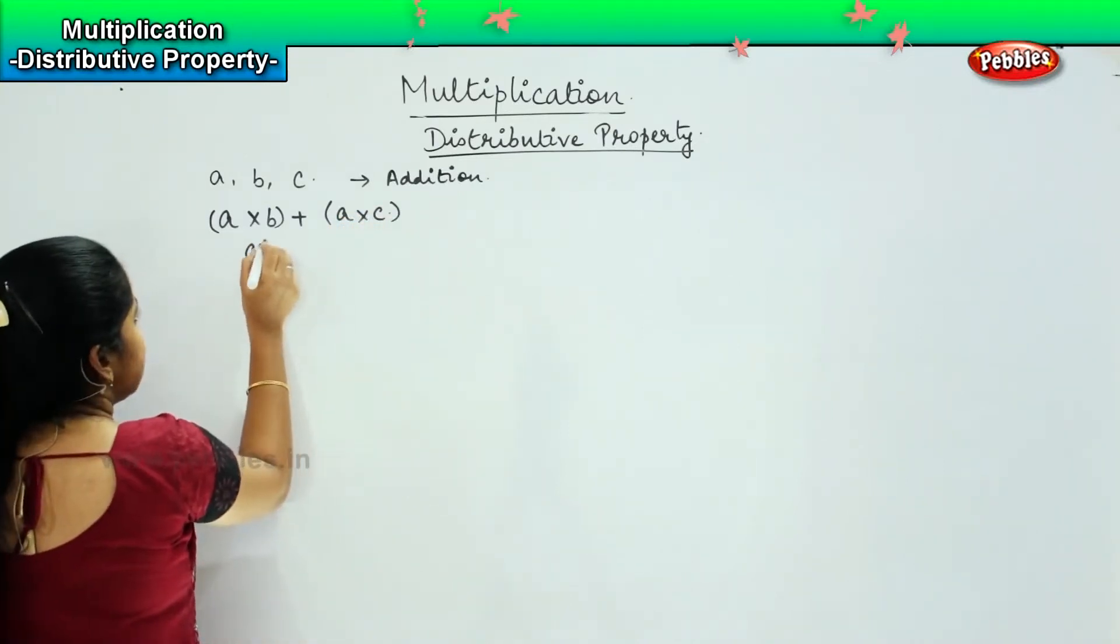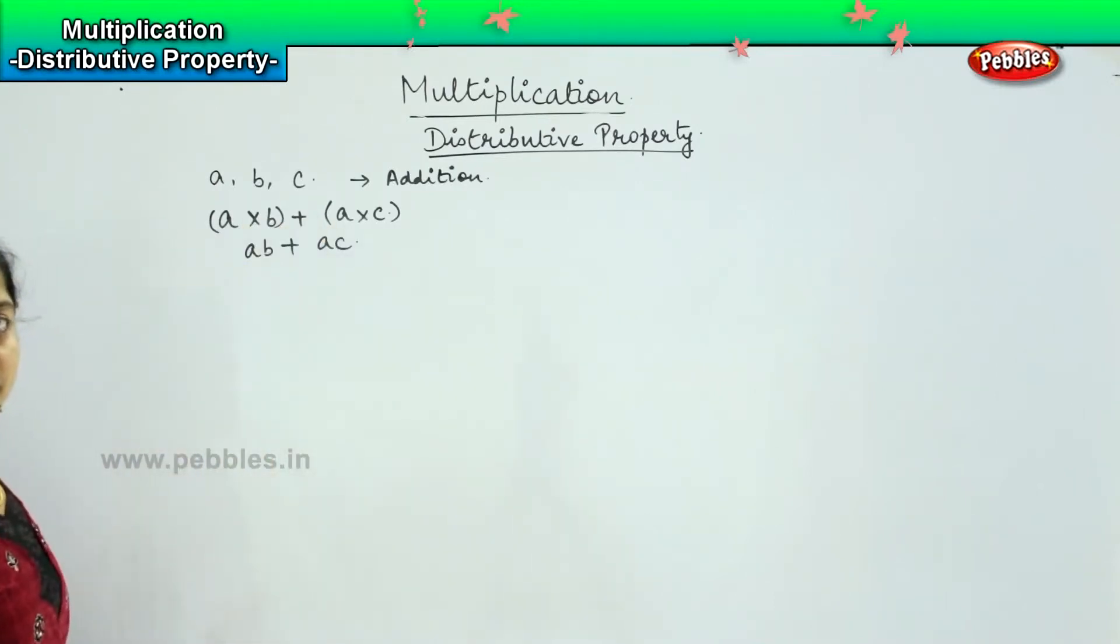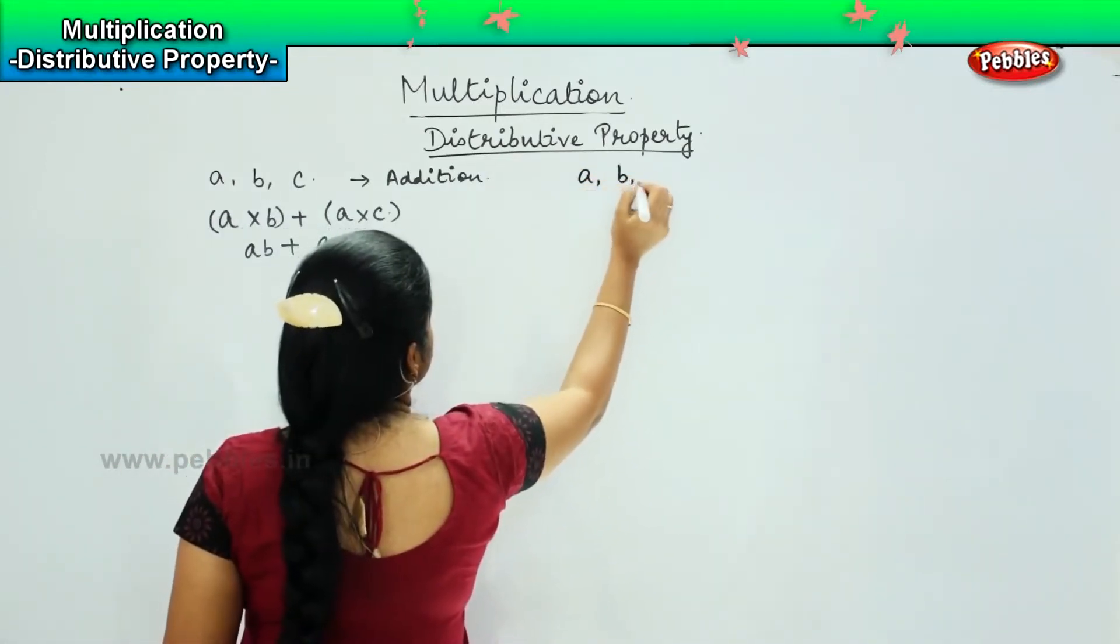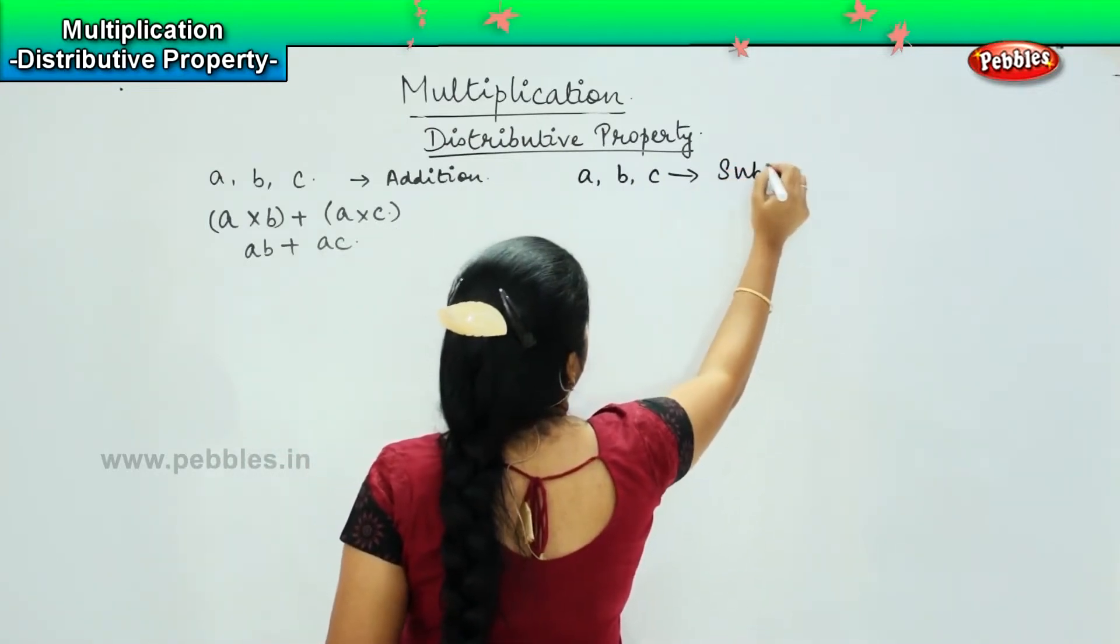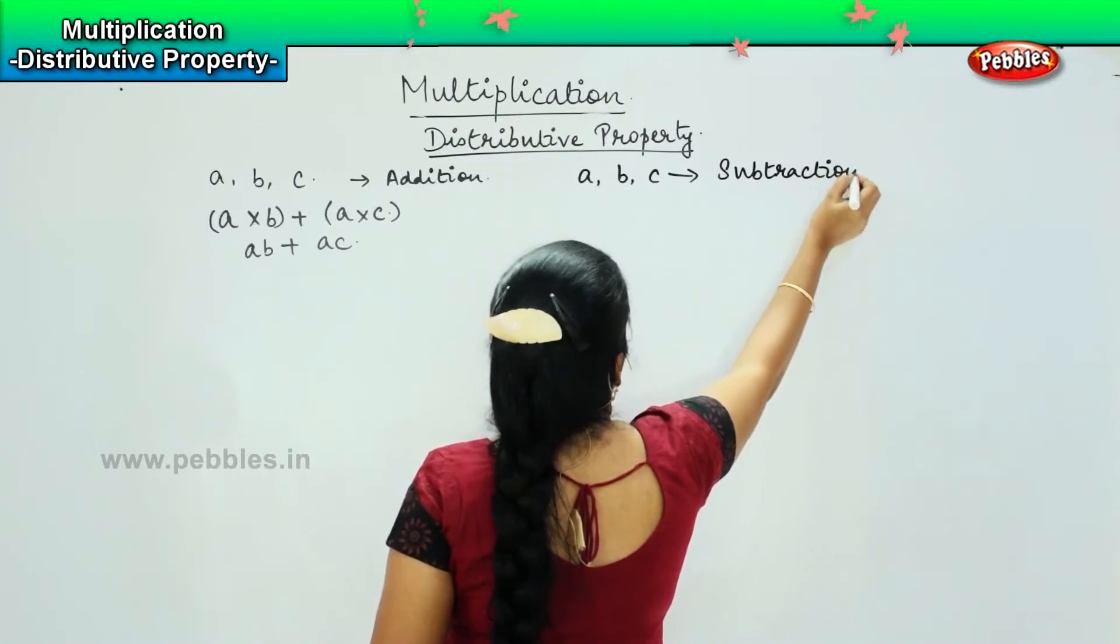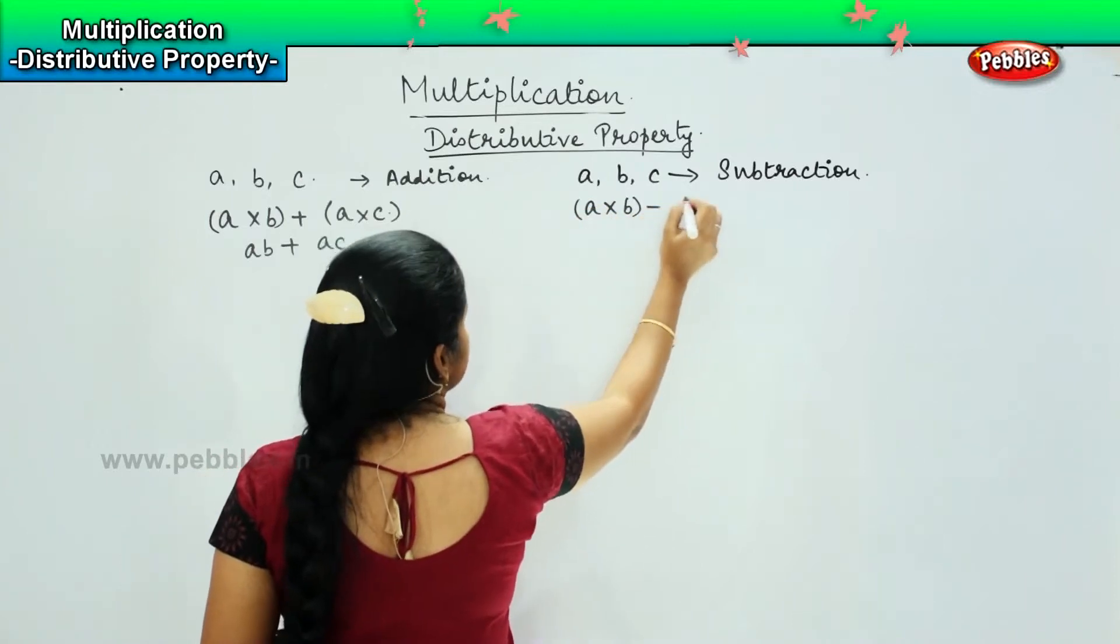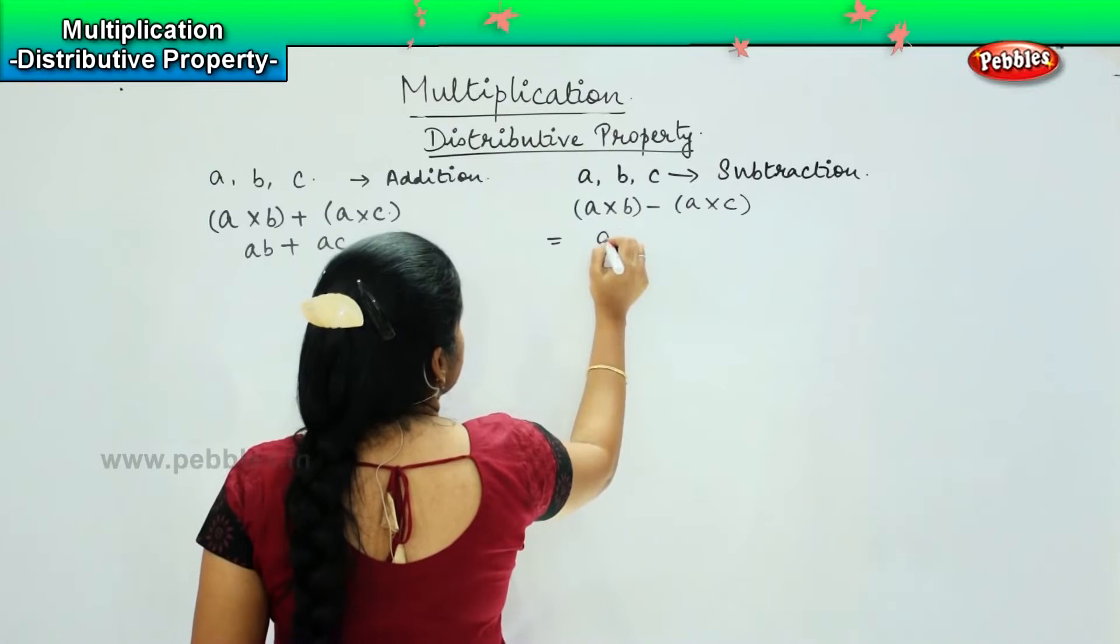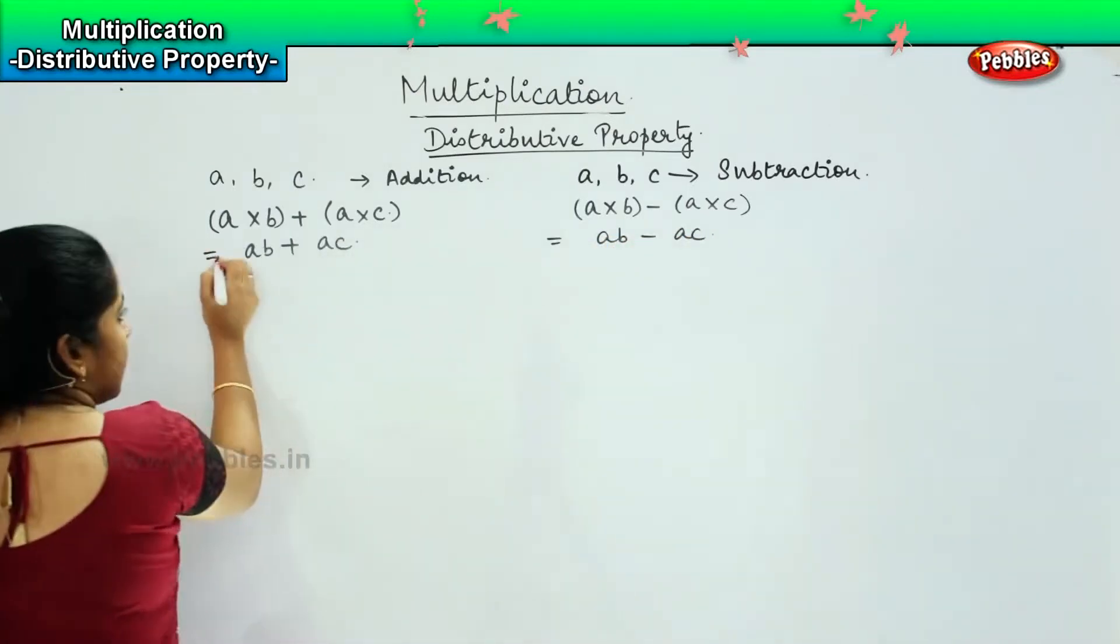I can also write as A times (B plus A times C). Similarly, if it were like A, B, and C in a subtraction form, then the same example we can write as A into B minus A into C, which will be A times (B minus A times C).